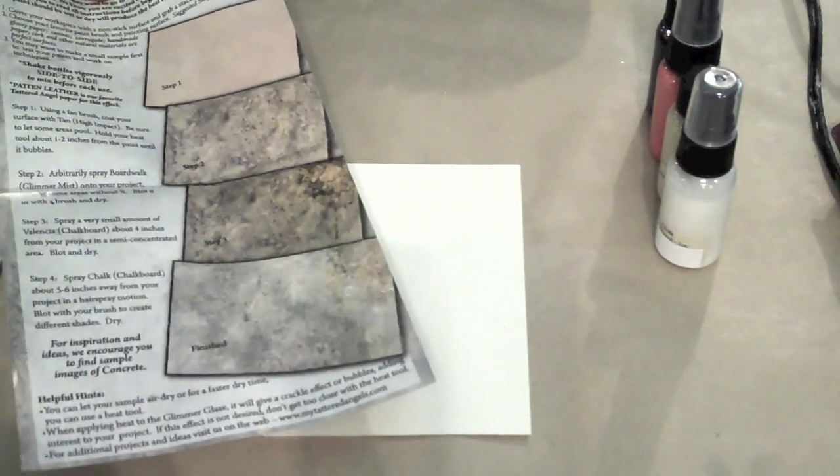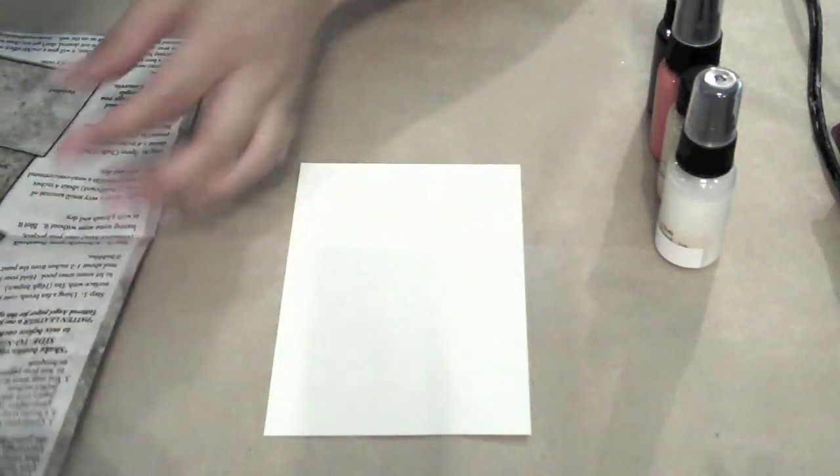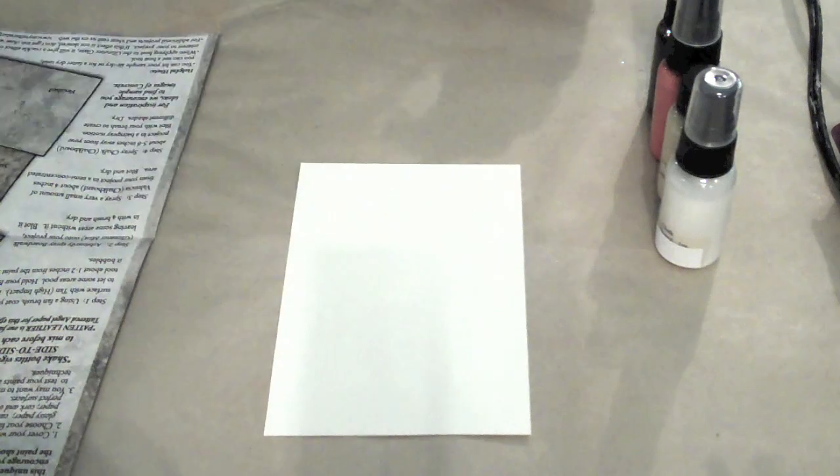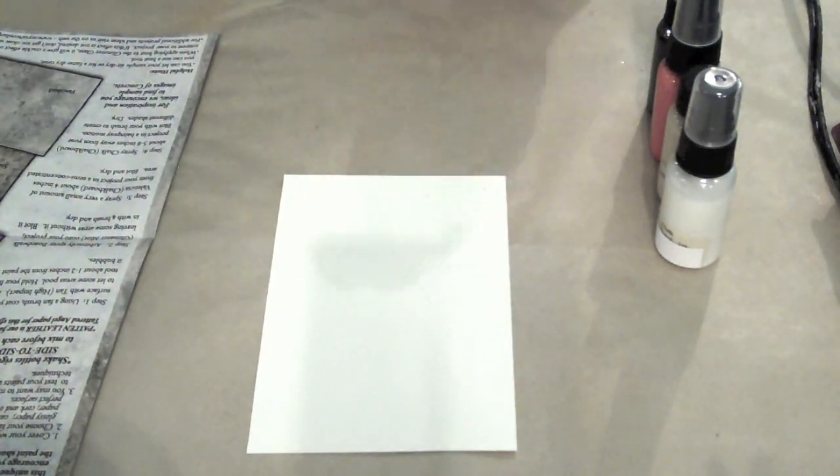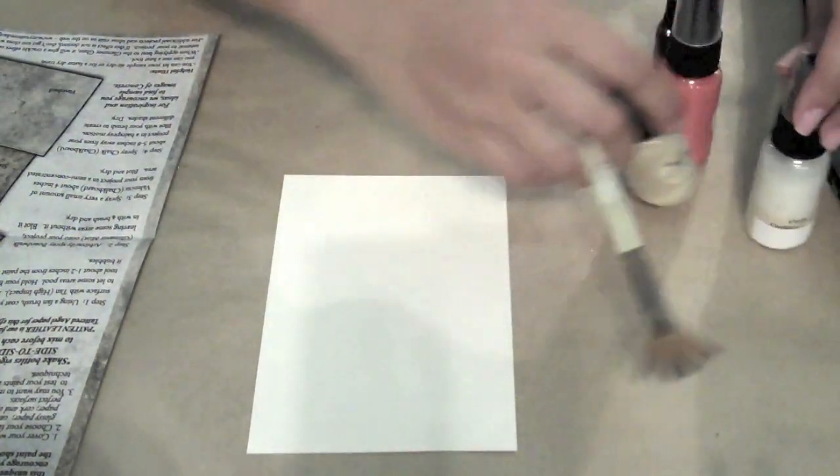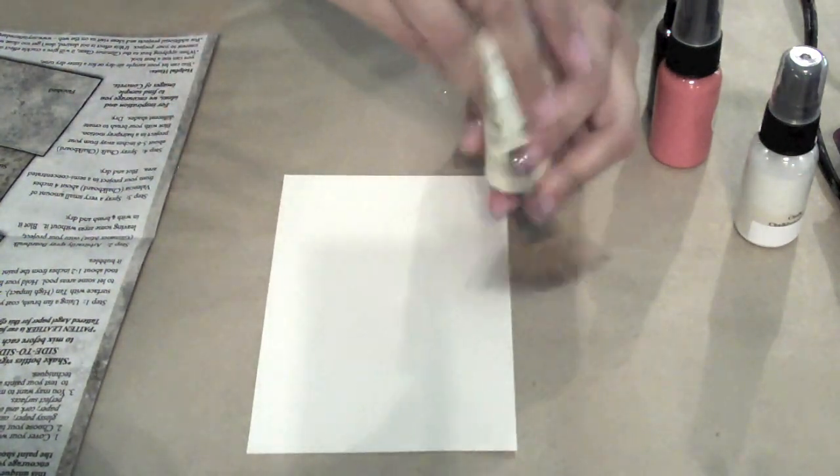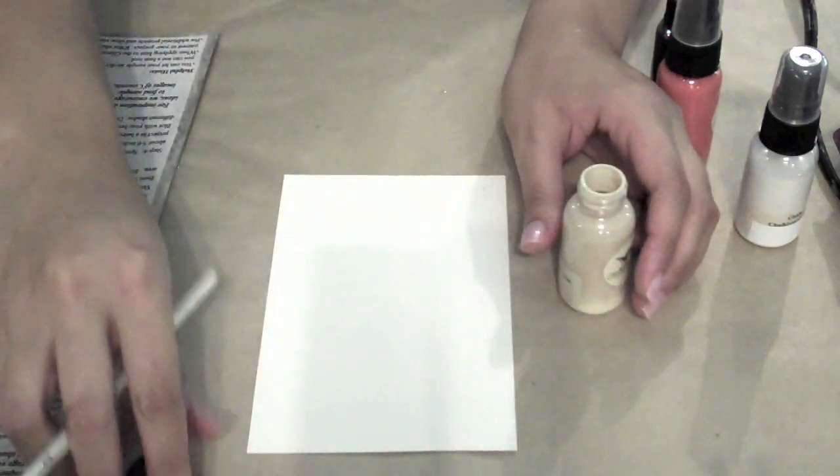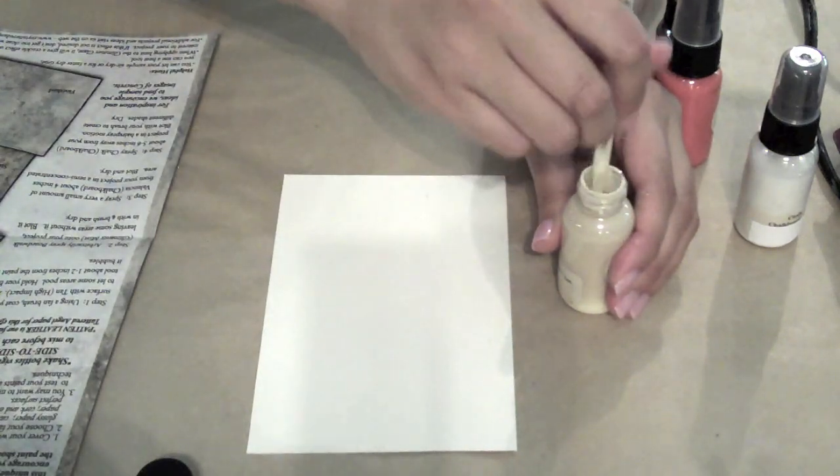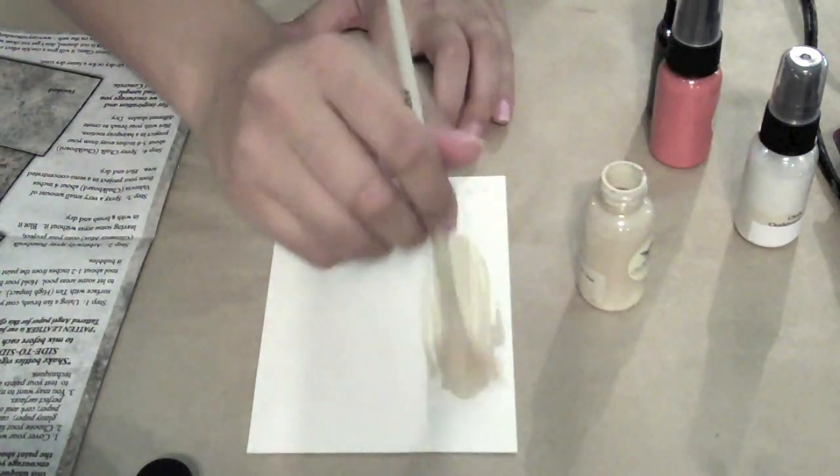Sometimes a little more, sometimes a little less. We're going to start with step one. The first step is to take your fan brush and your high impact tan paint. This is the high impact pigment. You're going to cover the whole surface of your paper and you're going to be very generous with this. You want it to puddle.